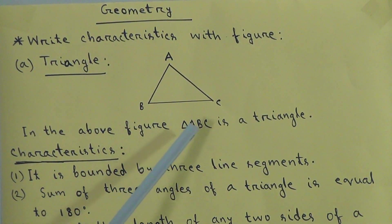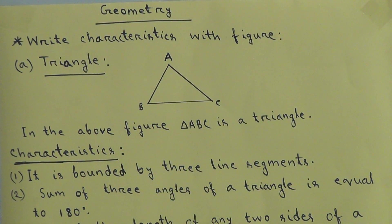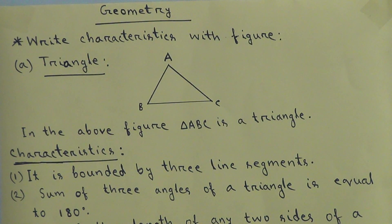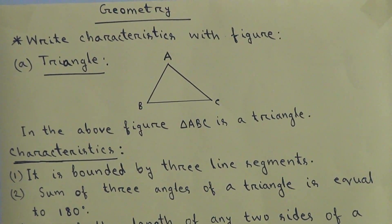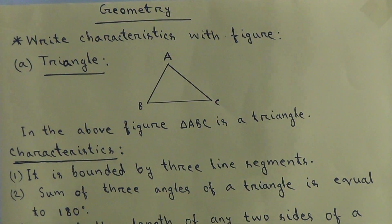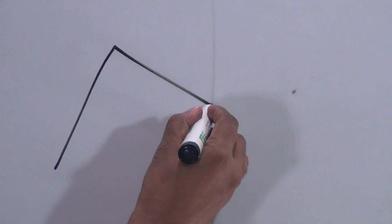At first, let's look at the triangle. This is the figure of a triangle. After drawing the triangle, we write: in the above figure, ABC is a triangle. Now the characteristics of a triangle — the first characteristic is: it is bounded by three line segments. In every triangle, three line segments exist.